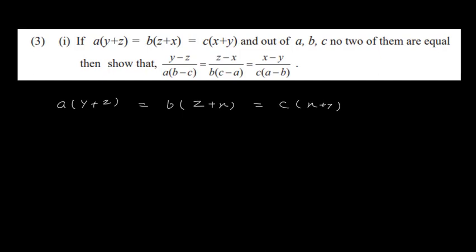Next problem: if a(y+z) = b(z+x) = c(x+y), and no two of a, b, c are equal, then show that (y−z) / (a(b−c)) = (z−x) / (b(c−a)) = (x−y) / (c(a−b)). If we observe the given equation and divide by abc, something useful emerges.